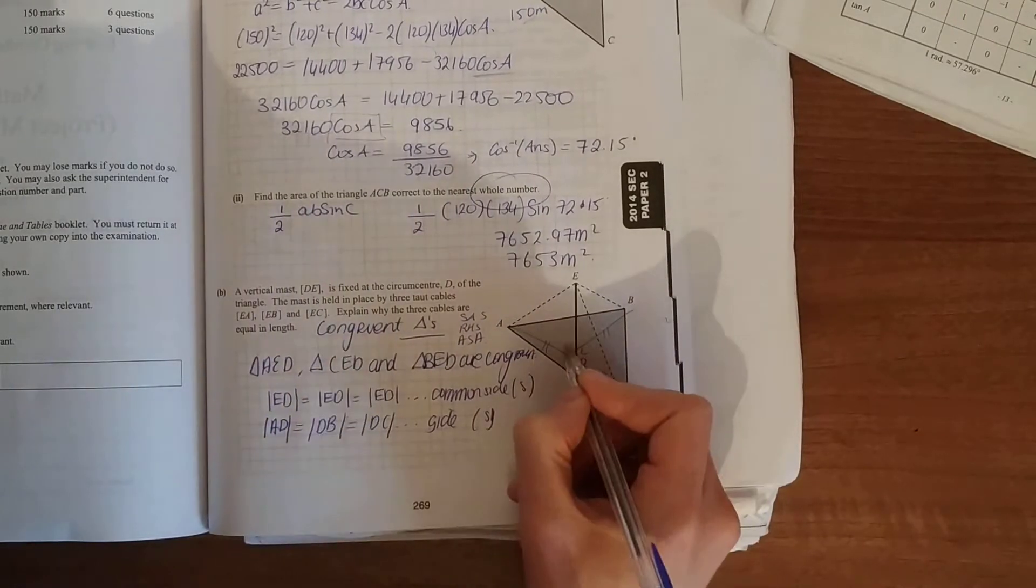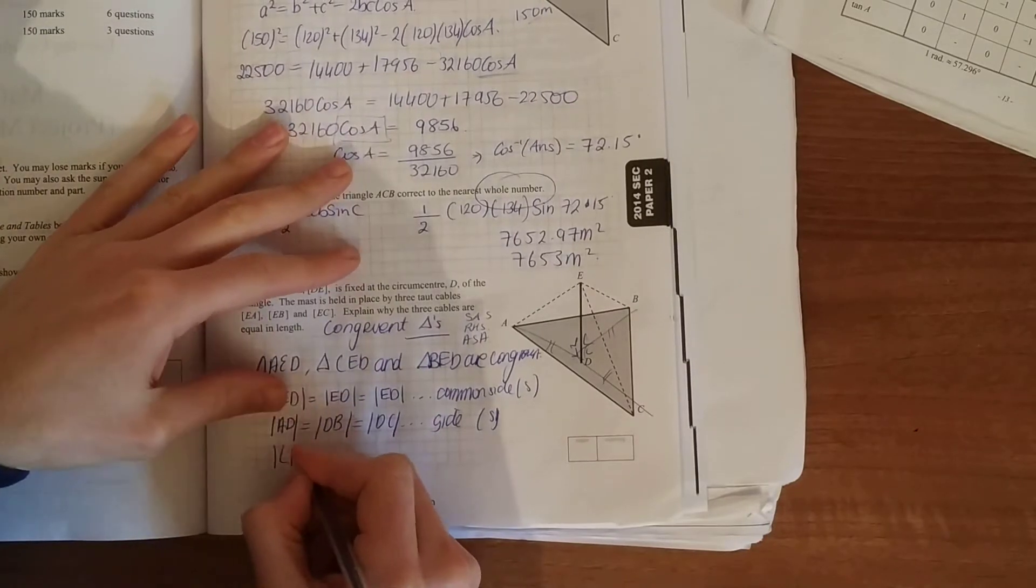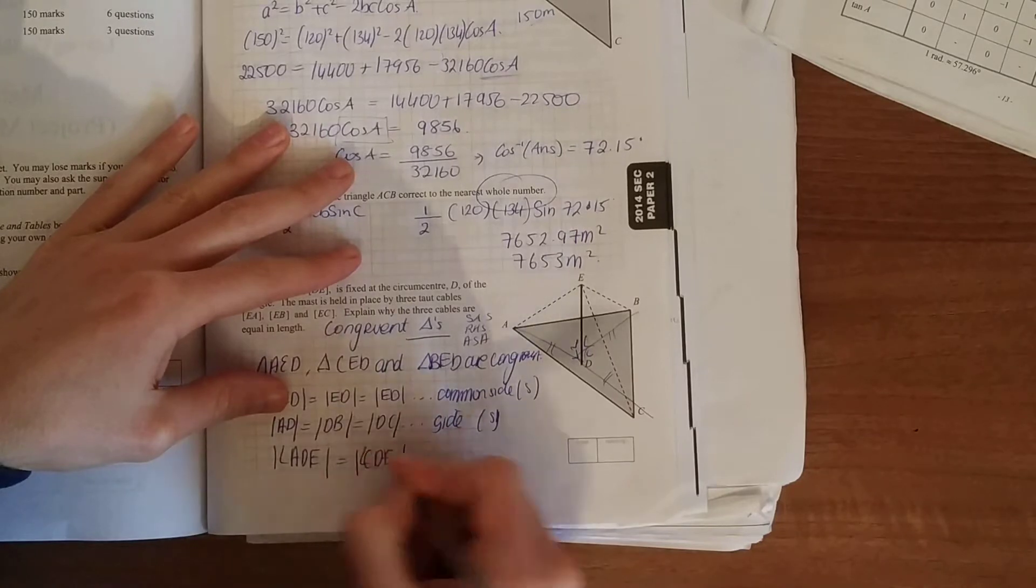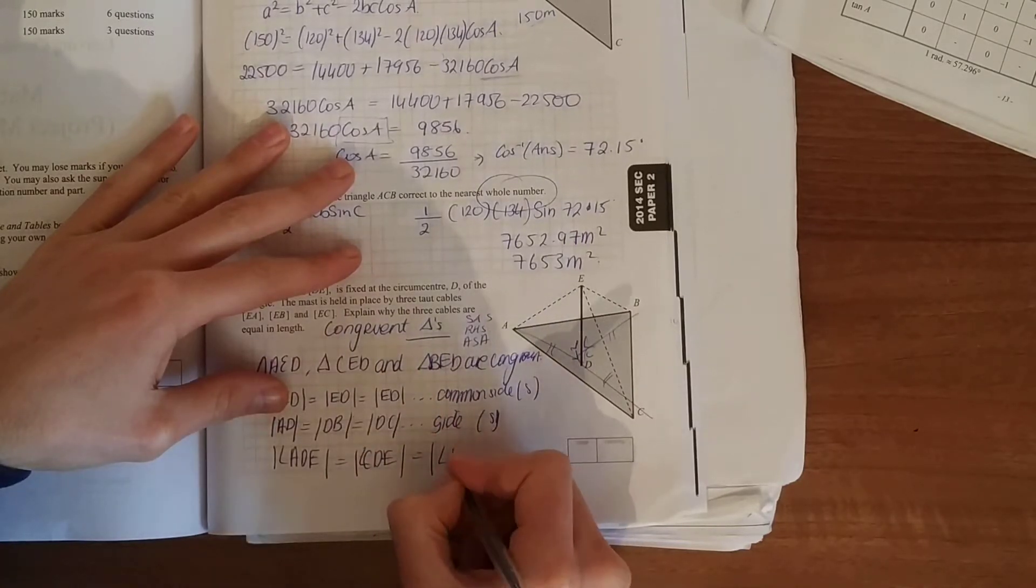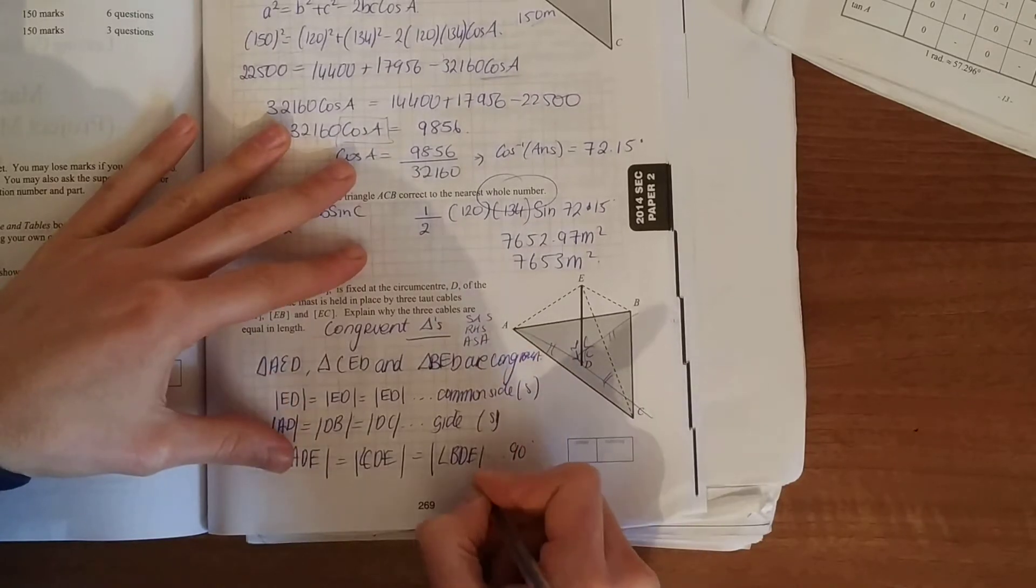Now we just need an angle here. It's a vertical mast, so angle ADE is equal to angle CDE is equal to angle BED, all 90 degrees.